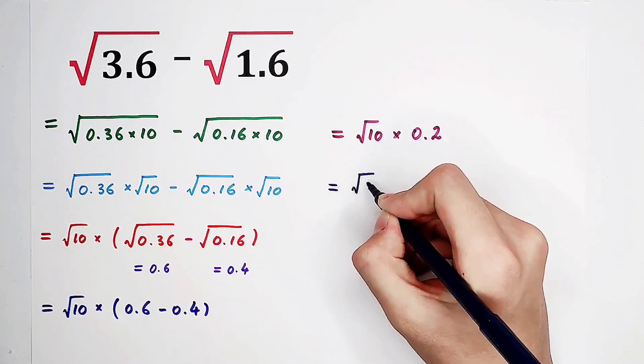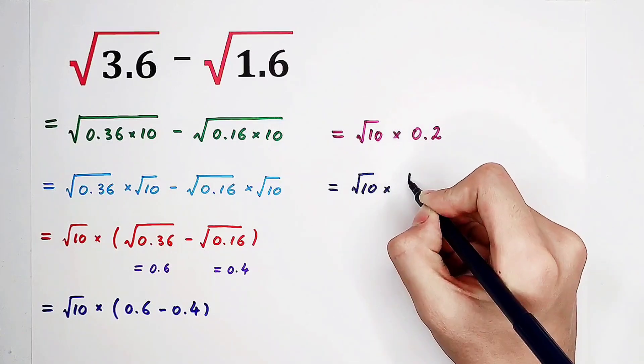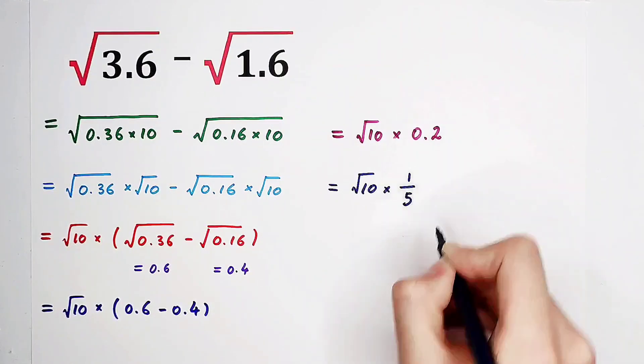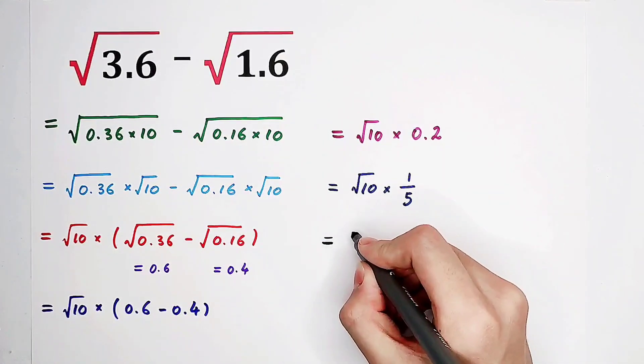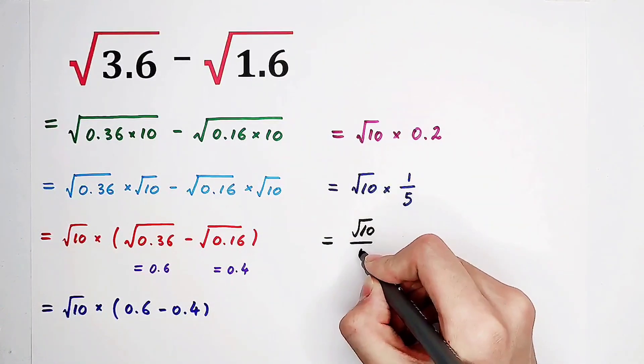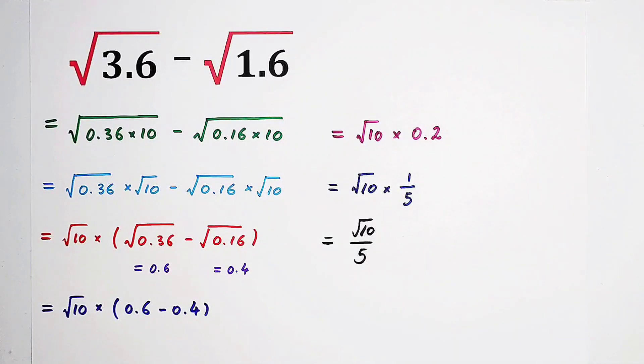Then, 0.2 can be written as 1 over 5. So, in the end, the answer is square root of 10 over 5.